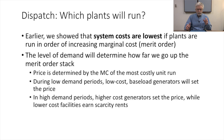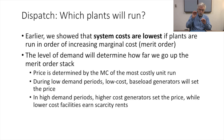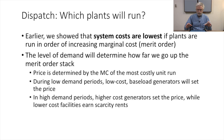The level of demand will determine how far we go up the merit order stack. Price is determined by the marginal cost of the most costly unit that is run. During low demand periods, low cost base load generators will set the price. In high demand periods, high cost generators set the price while lower cost facilities earn scarcity rents.